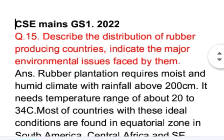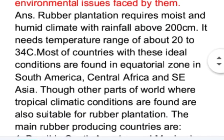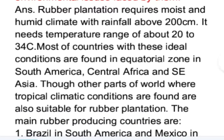Rubber plantation requires a moist and humid climate with rainfall above 200 cm. It needs a temperature range of about 20 to 34 degrees centigrade. Most countries with these ideal conditions are found in the equatorial zone in South America, Central Africa and South East Asia, though other parts of the world where tropical climatic conditions are found are also suitable for rubber plantation.